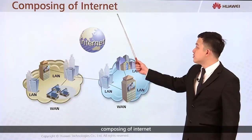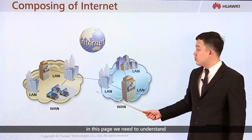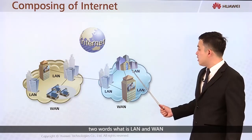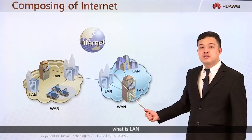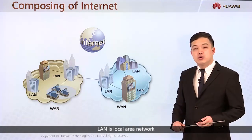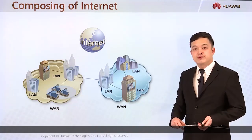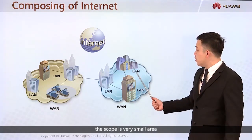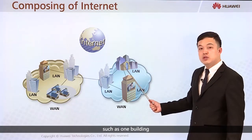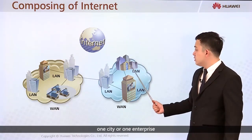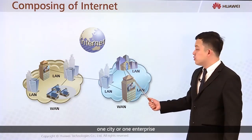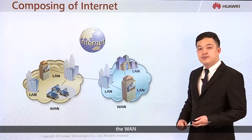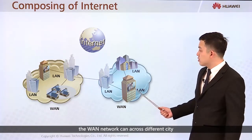Now let's look at the composition of the internet. We need to understand two words: LAN and WAN. What is a LAN? LAN is Local Area Network. The scope is very small — a small area such as one building, one city, or one enterprise. We can call that a LAN.